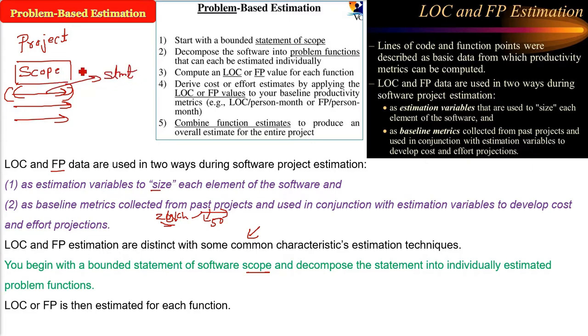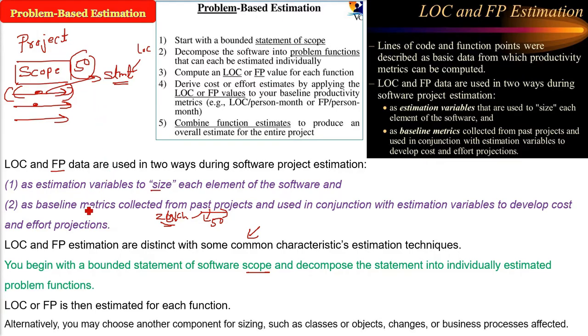For each function, LOC and FP can be estimated. From the scope, one statement will be taken. From that we will take out certain functions or line of codes. We will estimate from each of these. The scope will finally be converted into function points and line of codes.